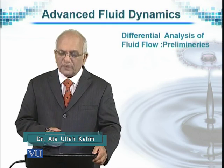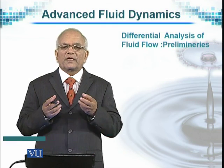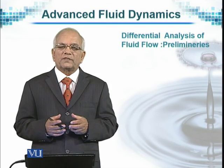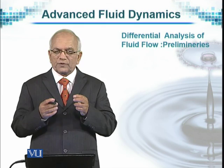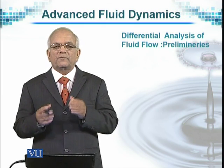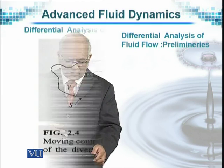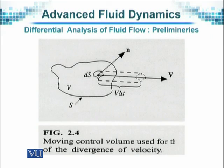So we continue that, and actually they come from the consideration of a small control volume that is considered in its position or change in its position from time t1 to t2. The moving control volume we have tried to show in a picture here, and this is considered for different times t1 and t2, and we try to see the divergence of velocity.